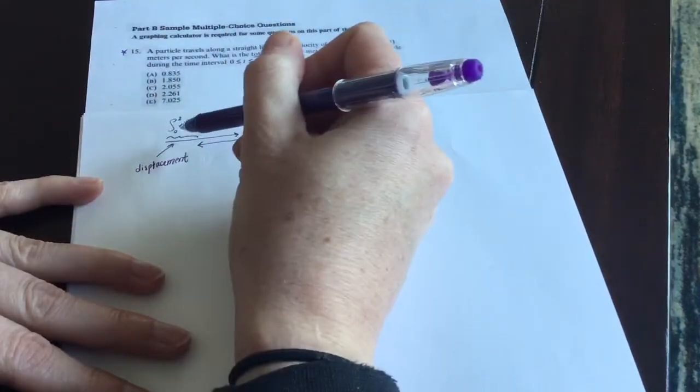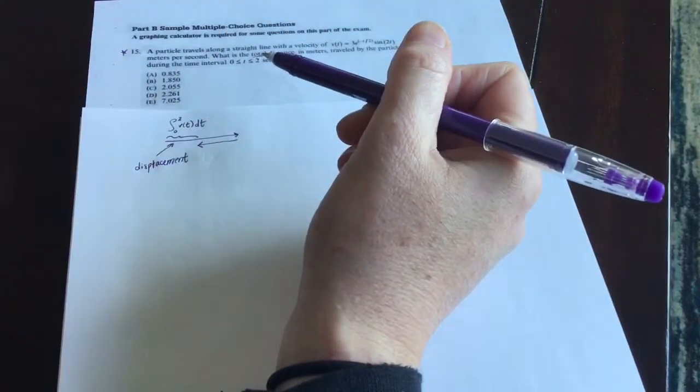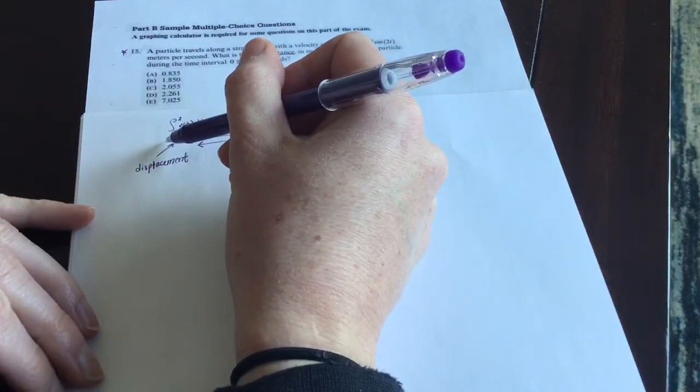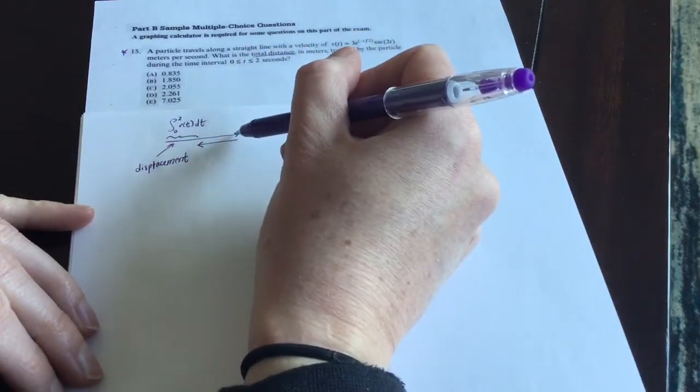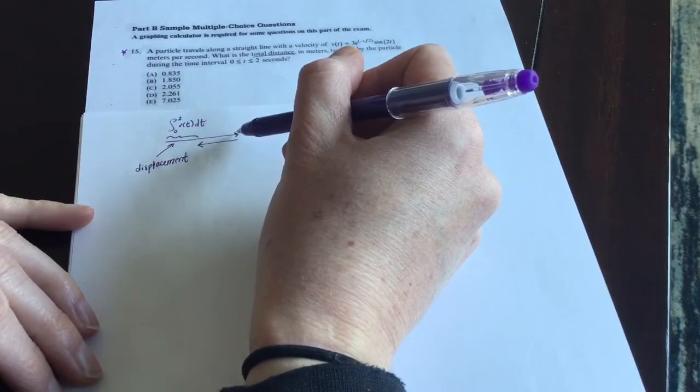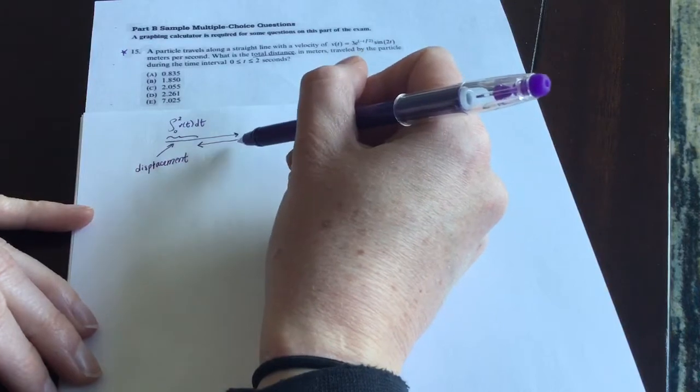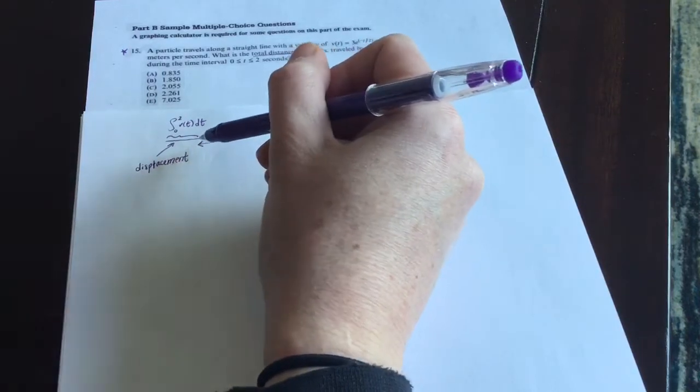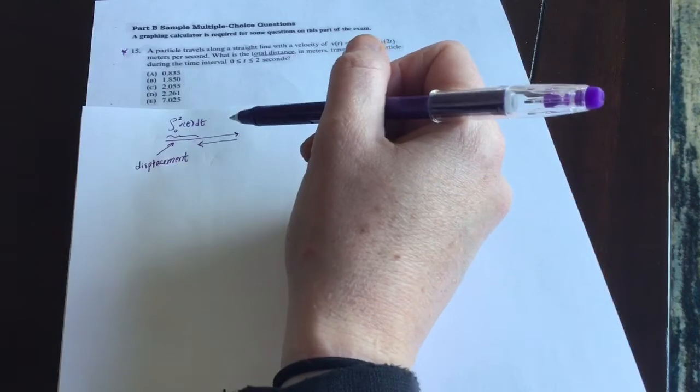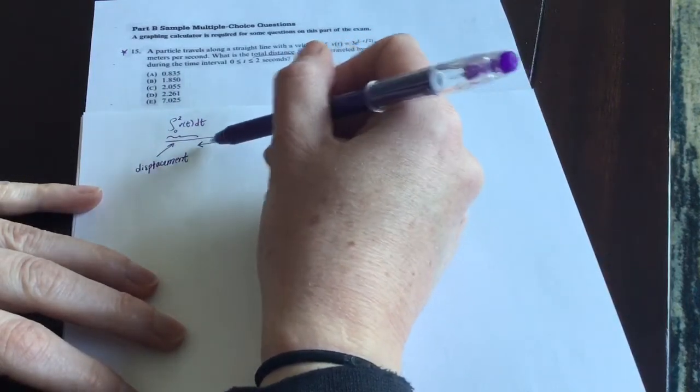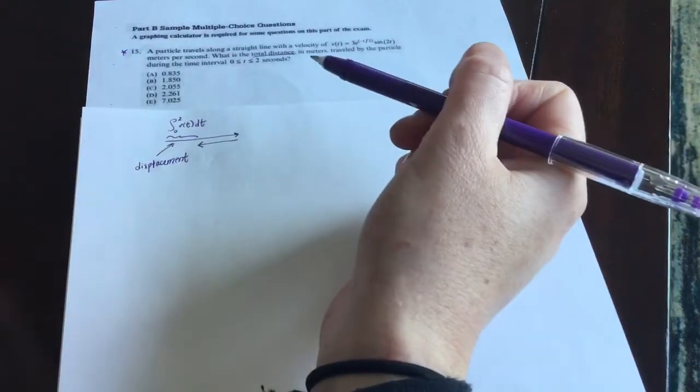But if you look at the velocity function, which it's the calculator section, we're going to make our calculators help us with that. What we're going to do is do the part where the velocity function is positive. We'll do a straight up integral for that part of the graph, but then the part where your velocity would have been negative to avoid getting a negative change in position, we're going to evaluate that integral for that part of the graph, but we're going to negate its value.